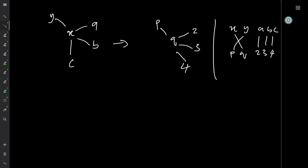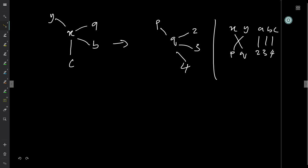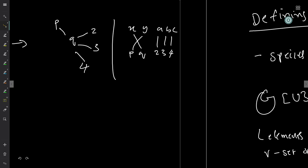As another example, you have a tree with vertex X going to Y, going to A, B, and C. This can be mapped to vertex Q going to P, 2, 3, and 4. This map between two structures can be represented by the bijection between the corresponding sets {X, Y, A, B, C} and {P, Q, 2, 3, 4}, where X goes to Q, Y goes to P, A goes to 2, B goes to 3, and C goes to 4. These kinds of things are intuitively clear.